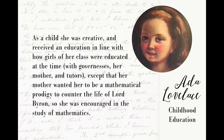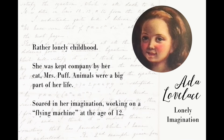As a child, she was creative and received an education in line with how girls of her class were educated at the time — with governesses, then her mother, and then with tutors — except that her mother wanted her to be a mathematical prodigy to counter the life of Lord Byron, so she was encouraged in the study of mathematics, which was unusual for the time. She had a rather lonely childhood, kept company by her cat Mrs. Puff, and animals were a big part of her life. She soared in her imagination and worked on a flying machine at the age of 12, so she was pretty precocious, and she liked studying math, even though her mom sort of forced her to.